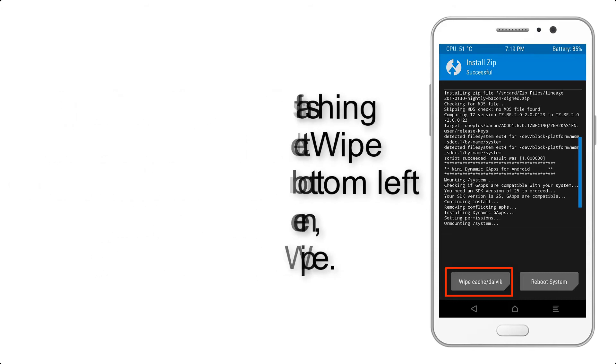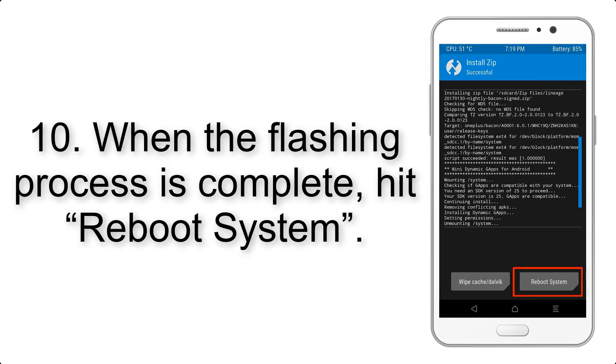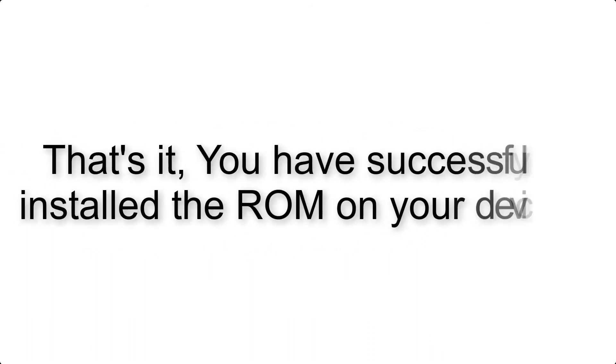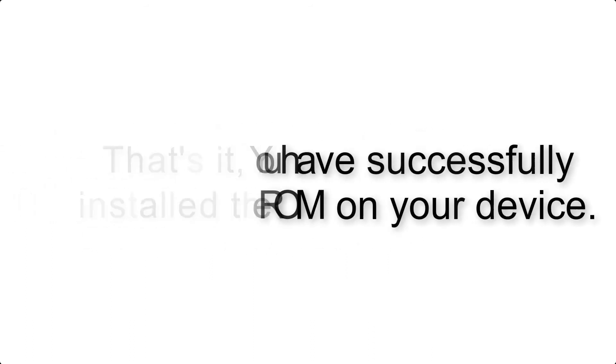Swipe to wipe. Step 10: When the flashing process is complete, hit Reboot System. That's it — you have successfully installed the ROM on your device.